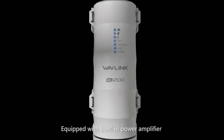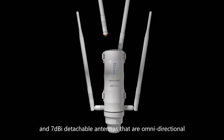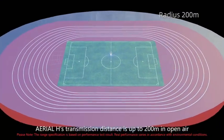Equipped with a built-in power amplifier and 7 dBi detachable omnidirectional antennas, Arial Edge's transmission distance reaches up to 200 meters in open air.